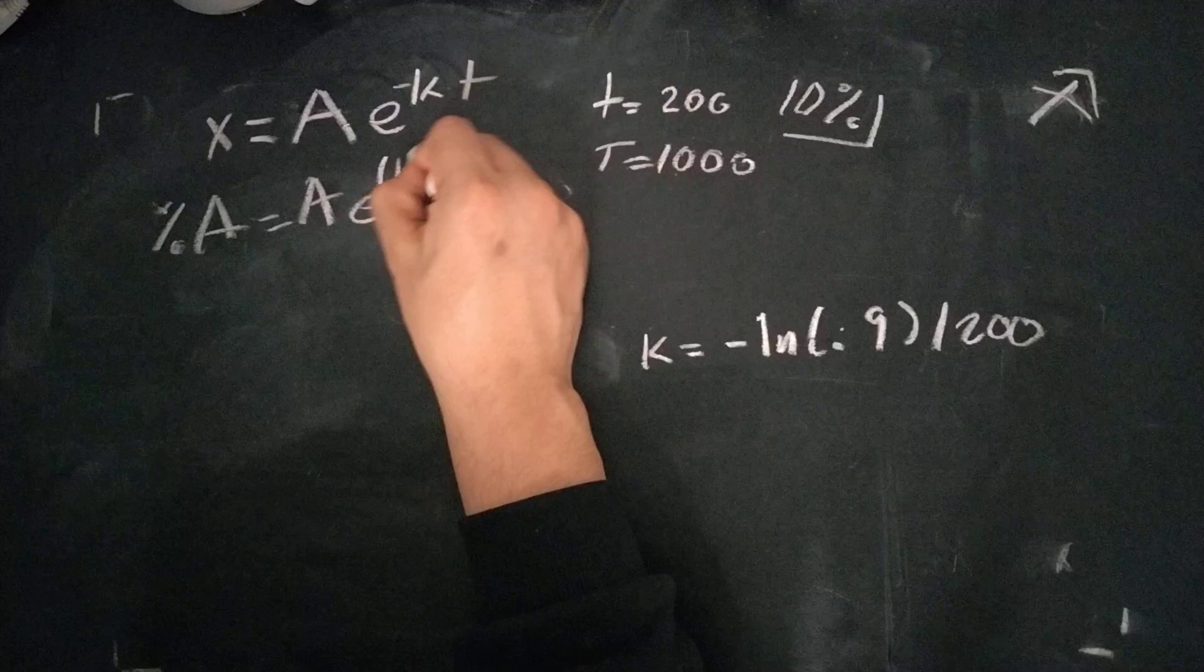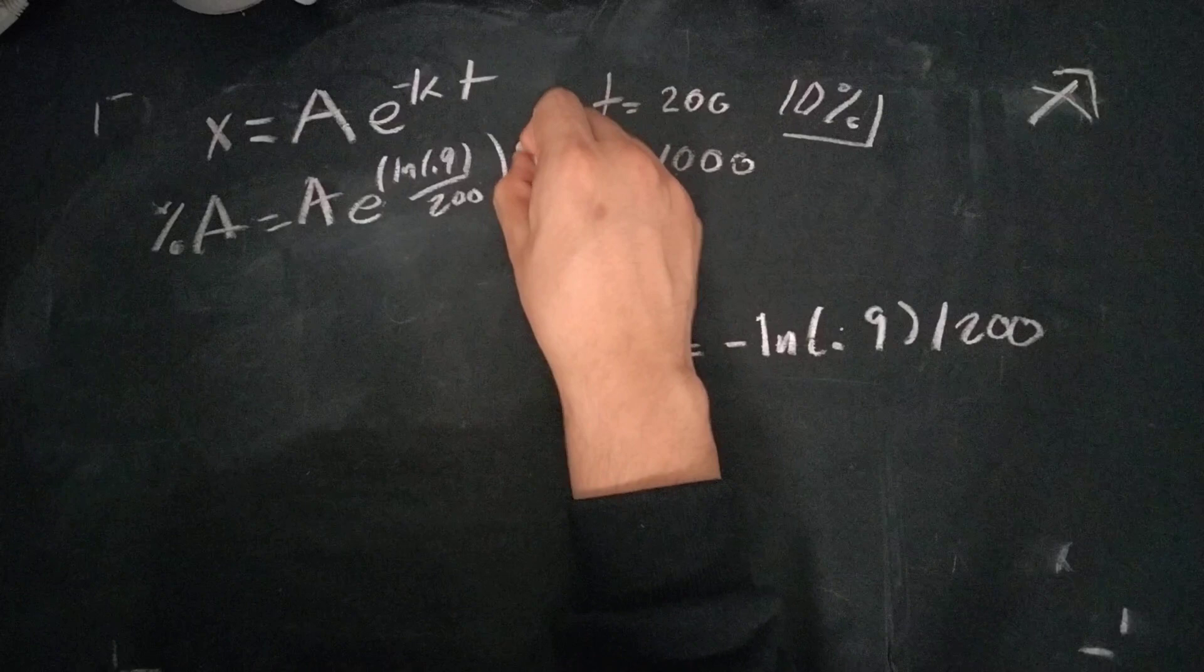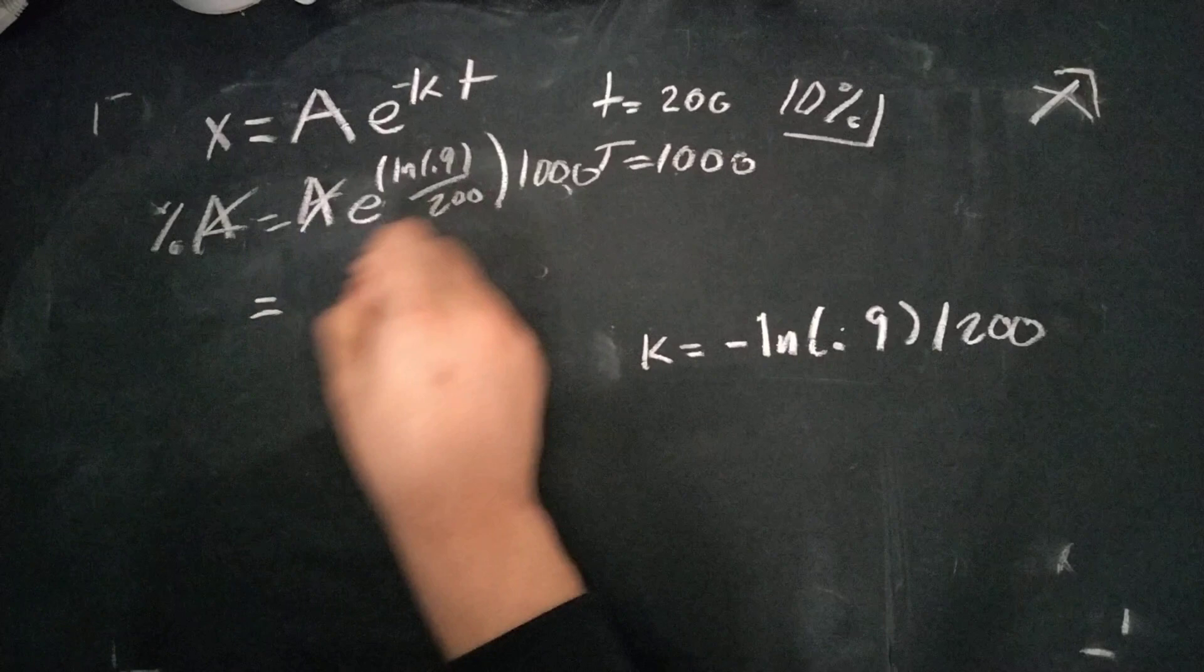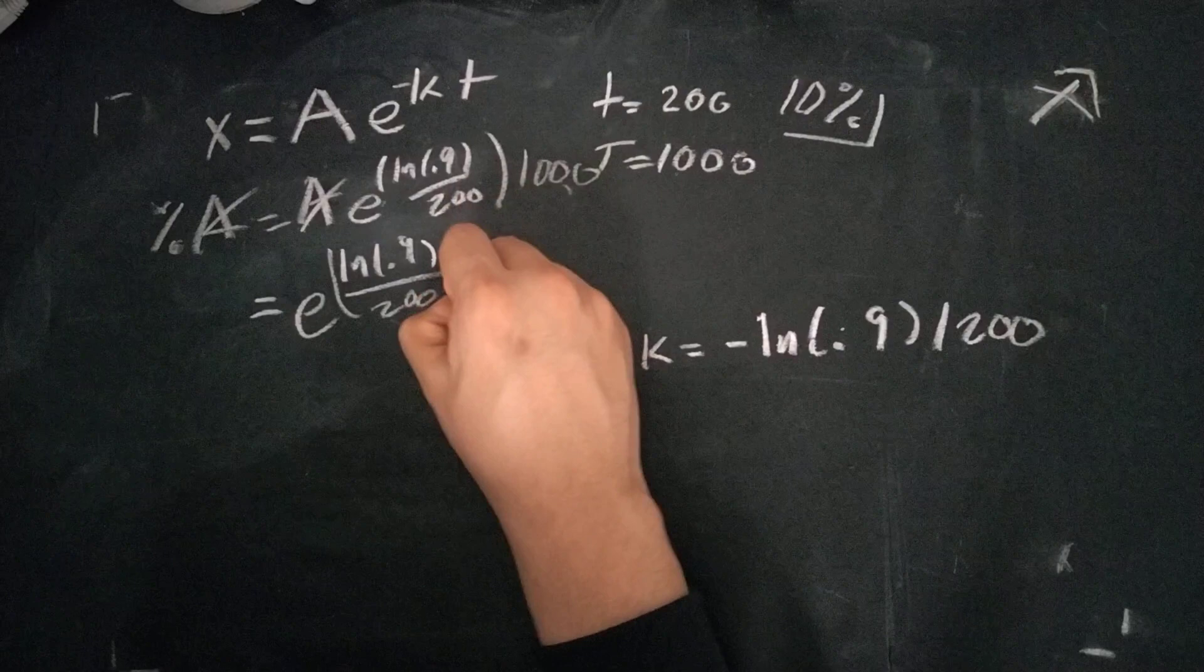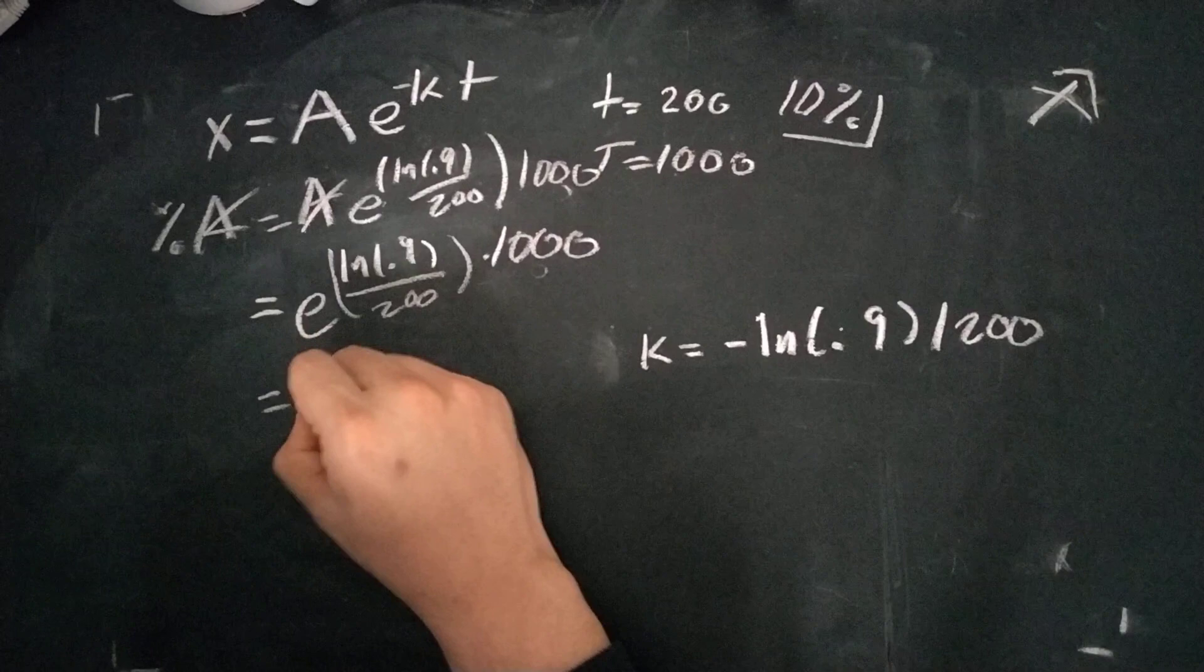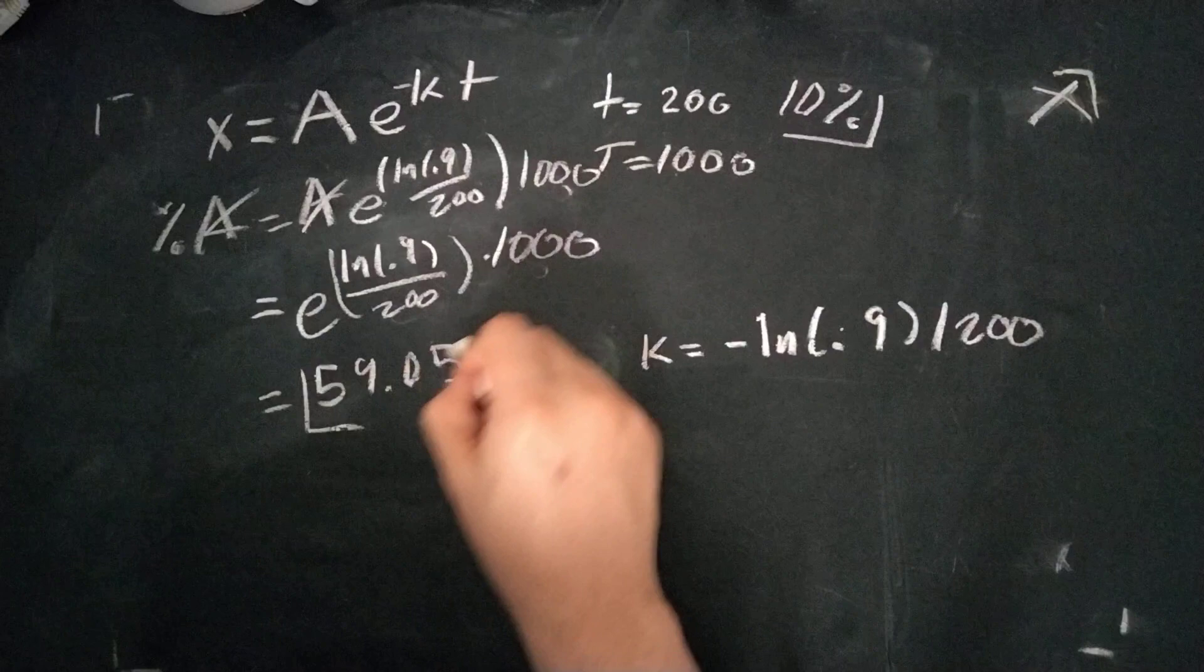So we end up with natural log 0.9 over 200 times 1000. A's cancel out. We end up with E, natural log 0.9 over 200, times 1000. And this is just equal to 59.05.